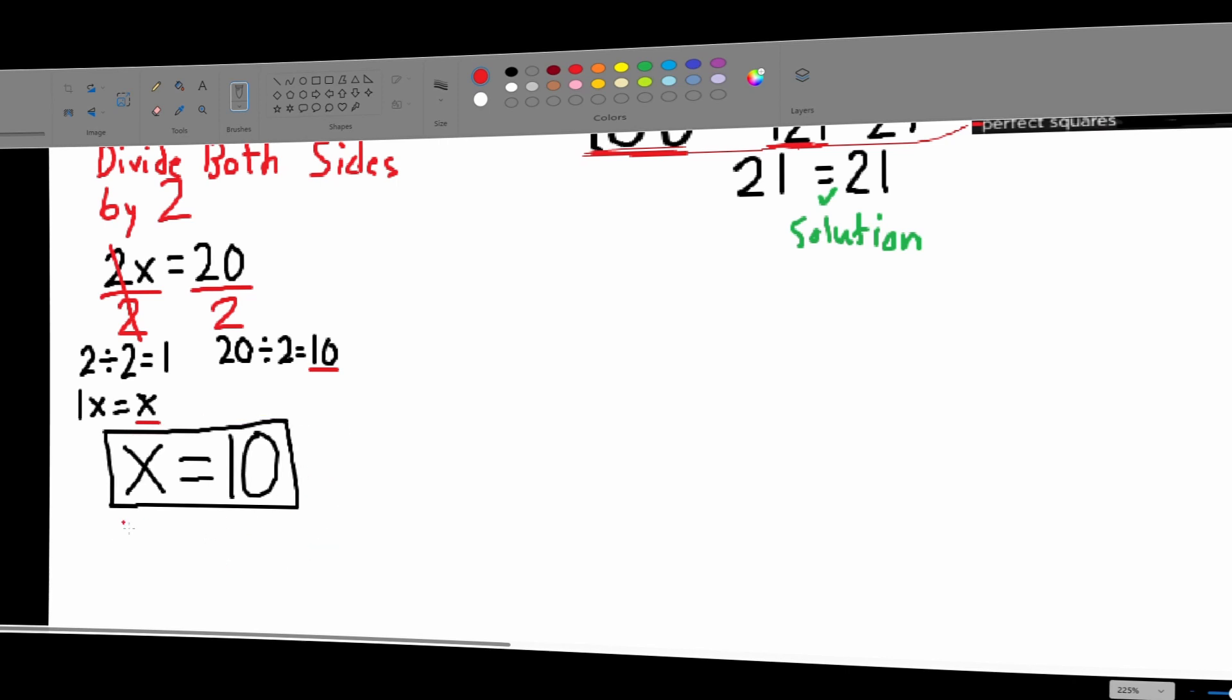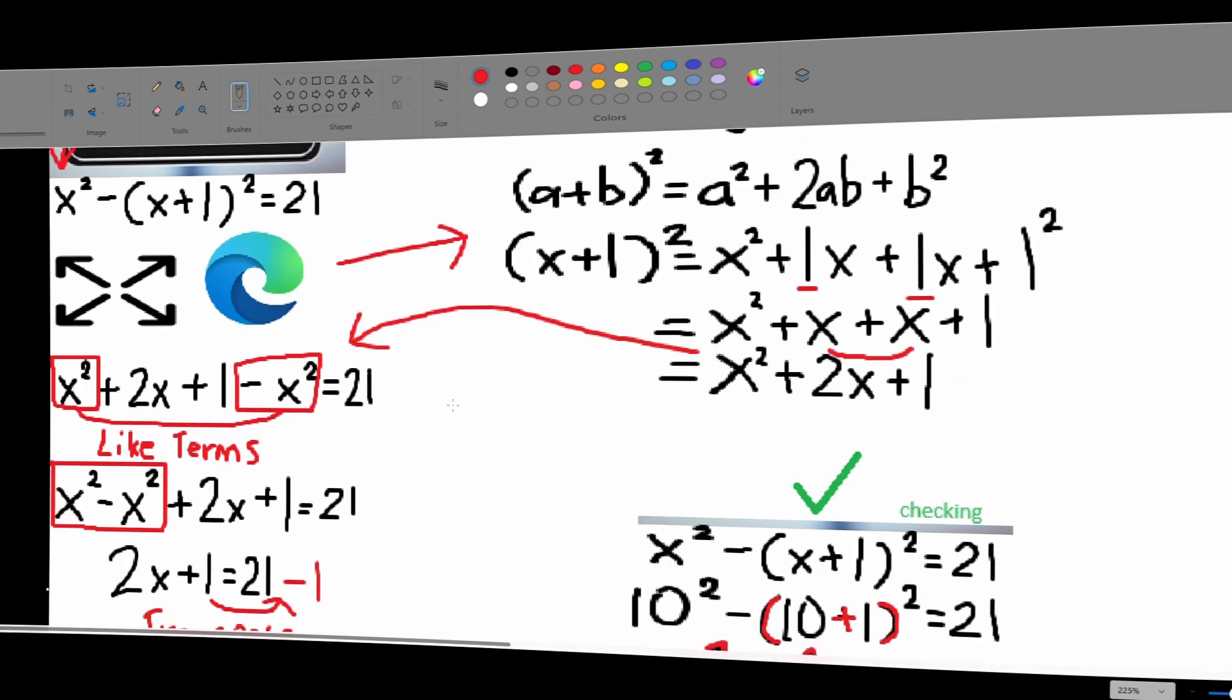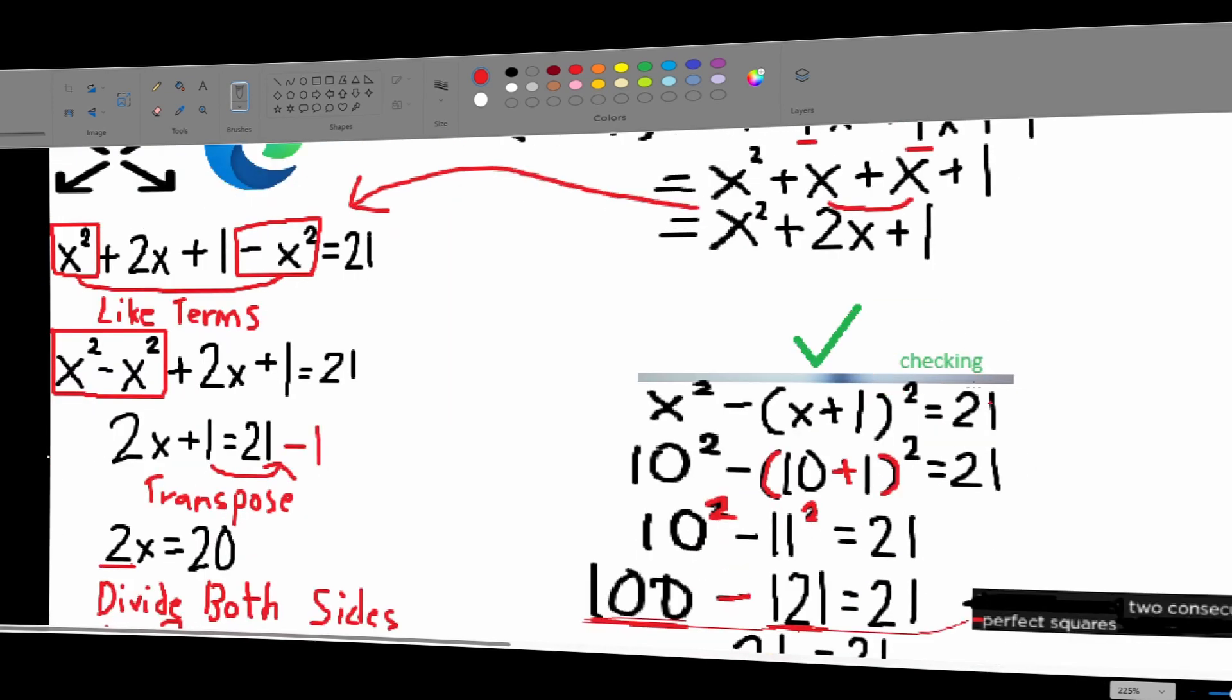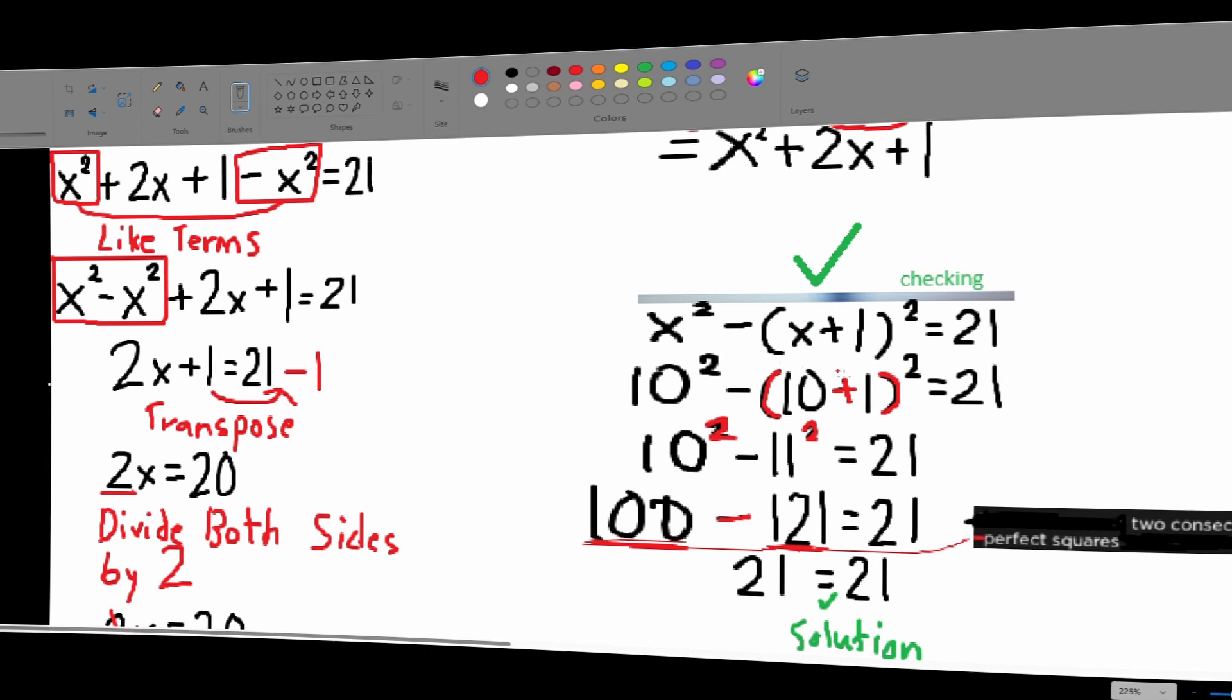So, we're going to use this and plug it in our original equation to check. Checking. x squared minus the square of x plus 1 equals 21. Sorry for that.